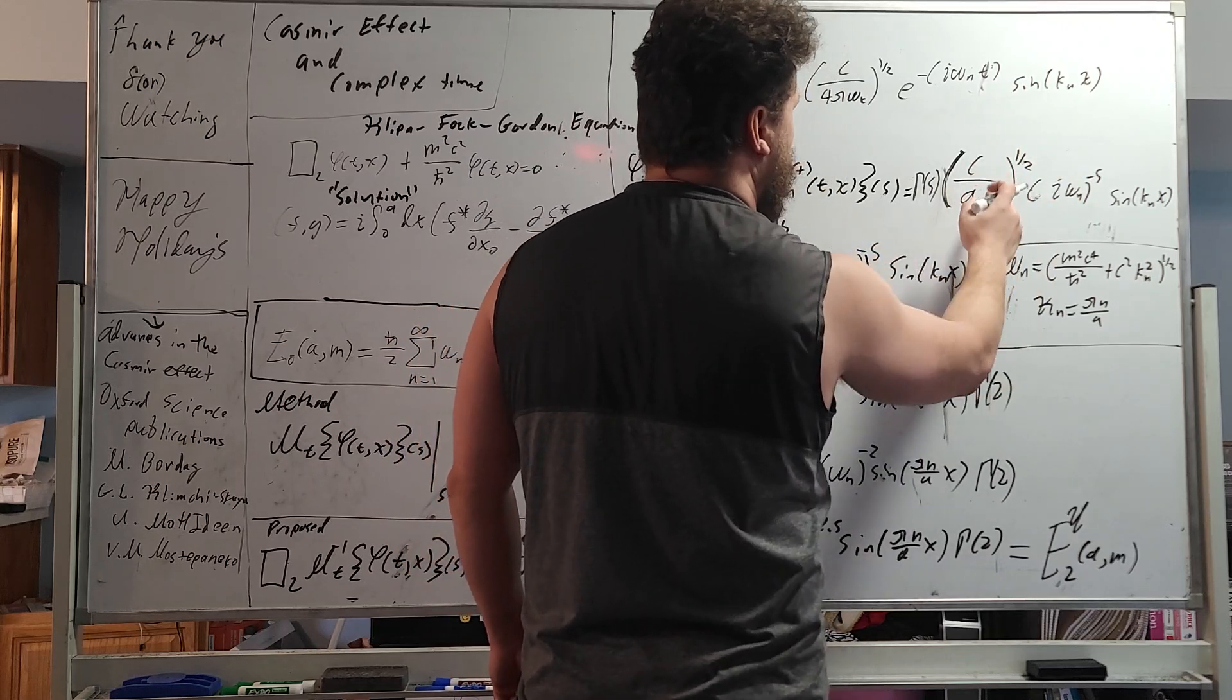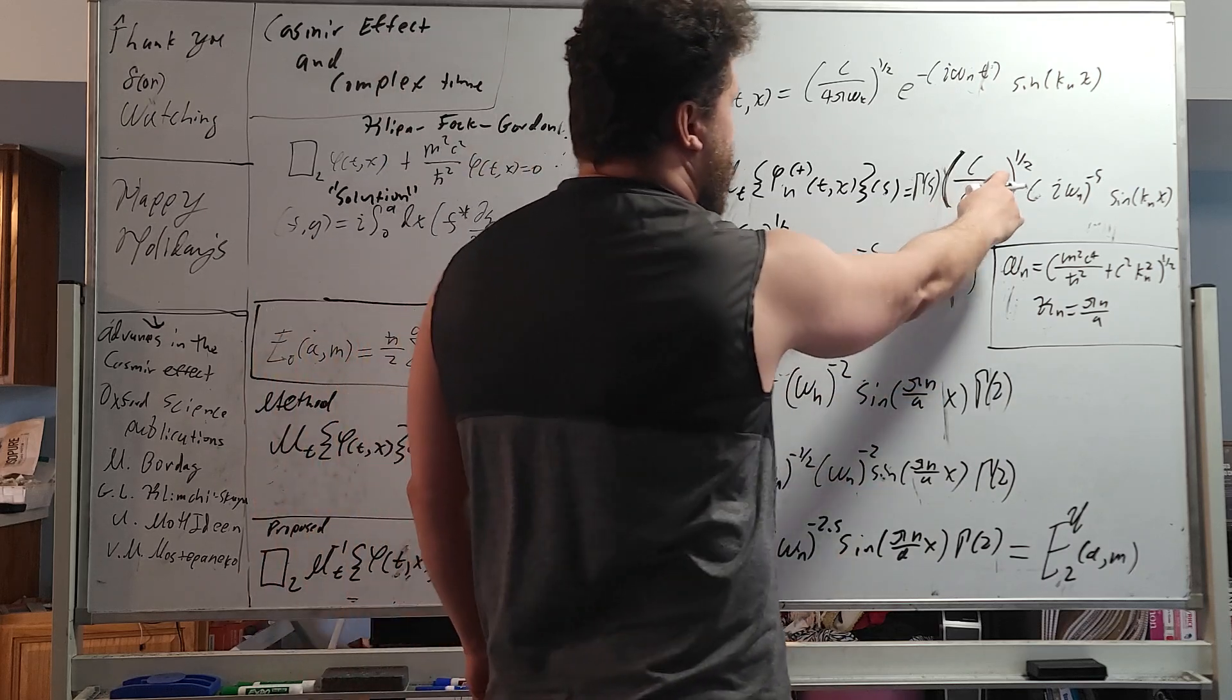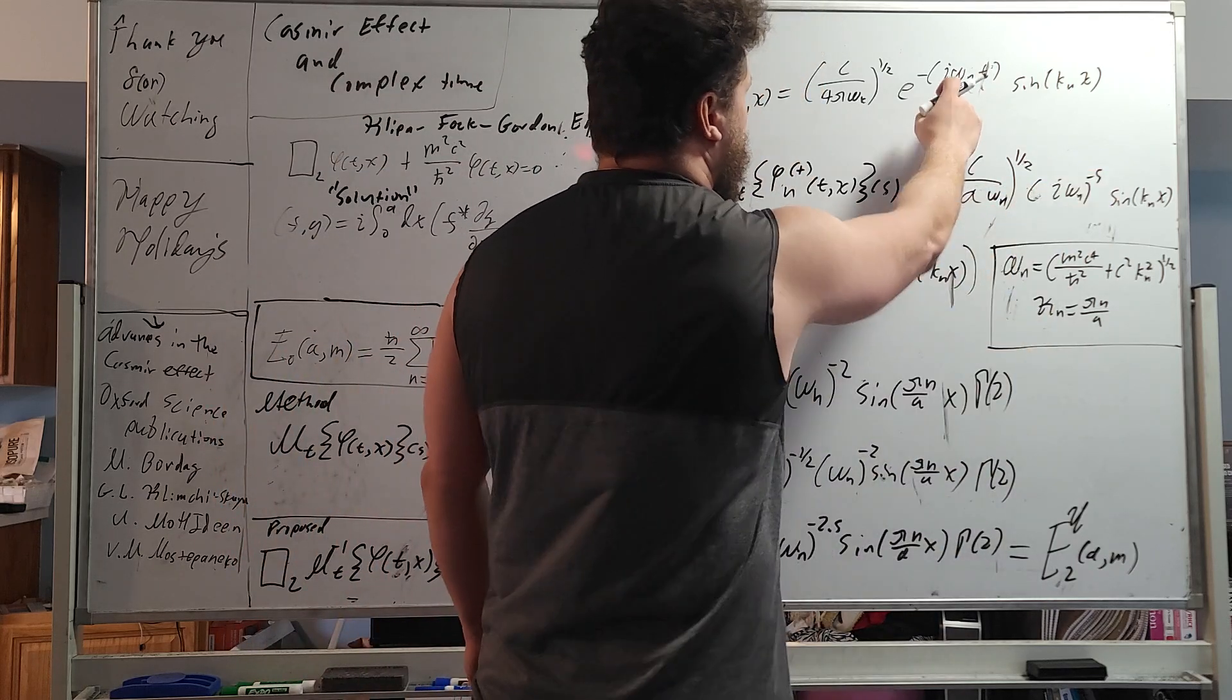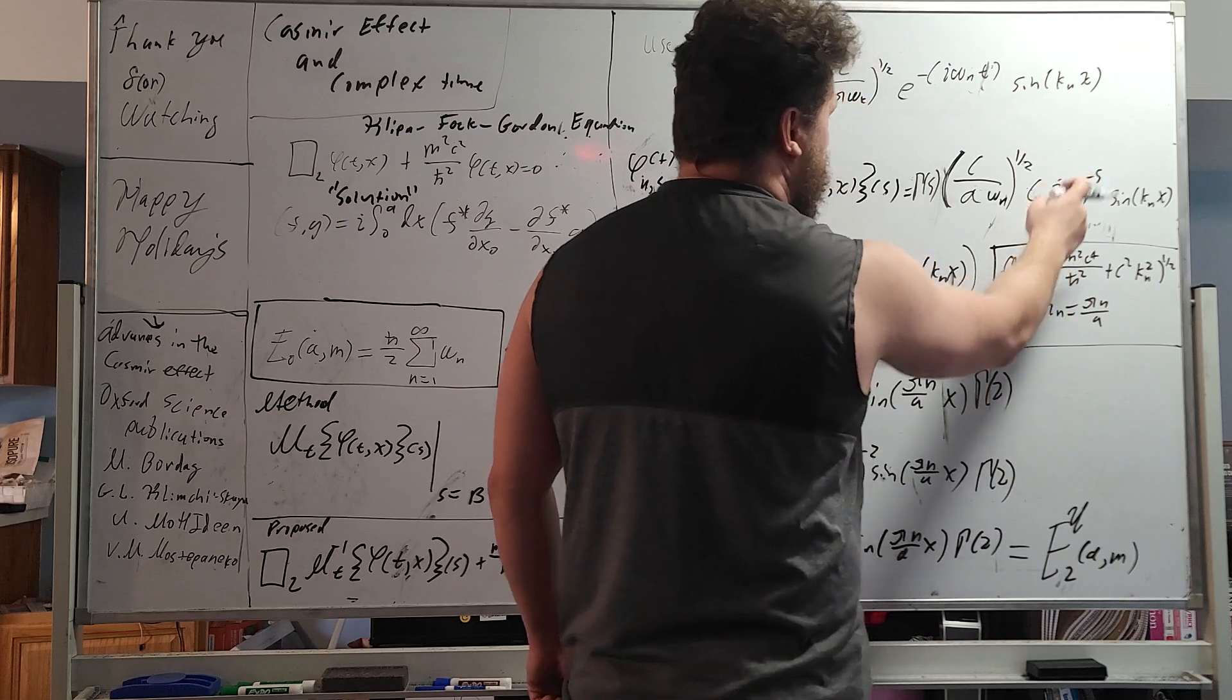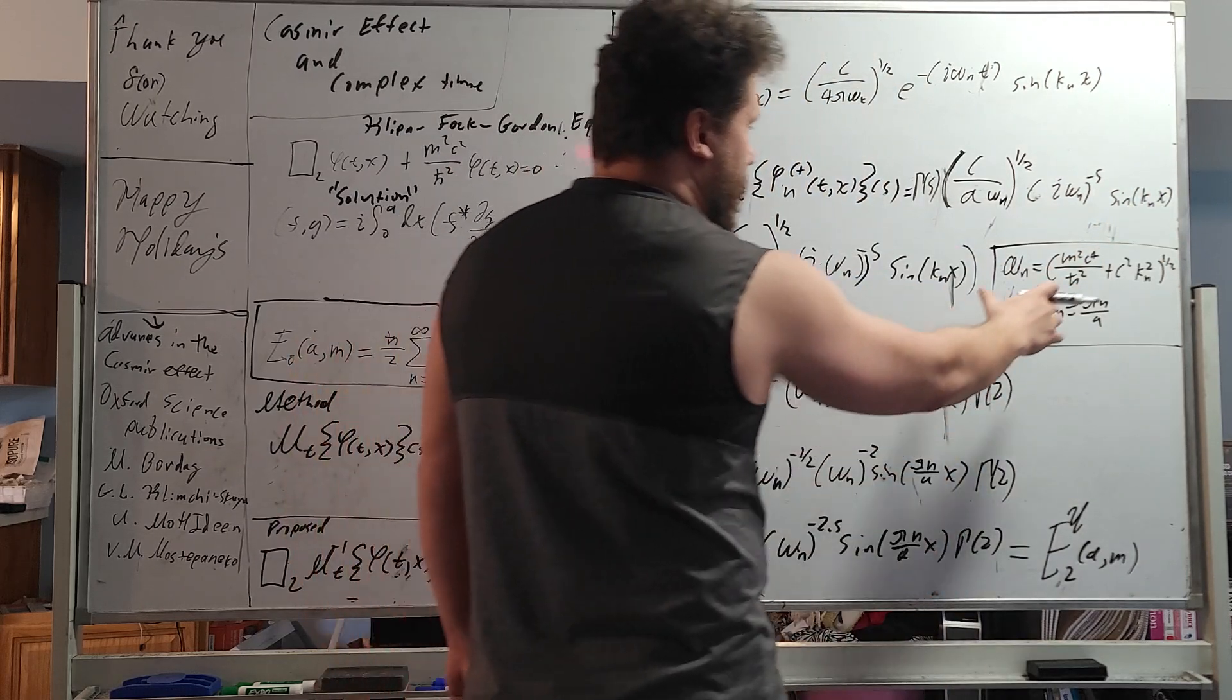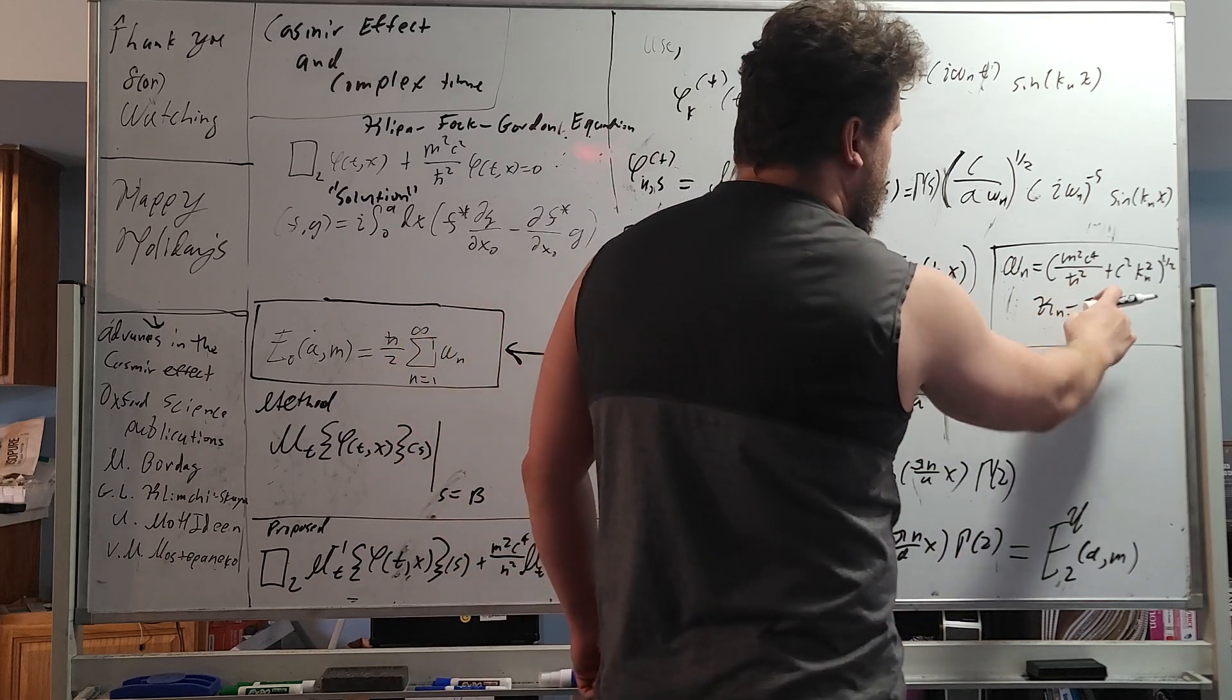We have C divided by A. A is the distance between the two plates. This omega is the harmonic oscillatory frequencies, all raised to the one-half. And then once we do the Mellin transform, since only one of these terms here has a time component, it just becomes here. Now, notice an imaginary number is there, so that makes things quite interesting. We have a sine K sub n x. And the harmonic frequencies are given here, or oscillator frequencies are given here, and K n is given right here, pi n divided by A.